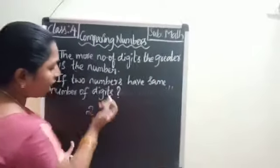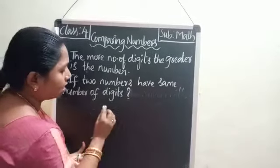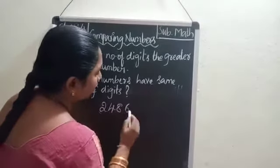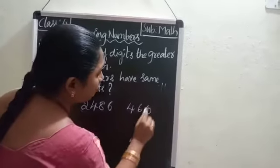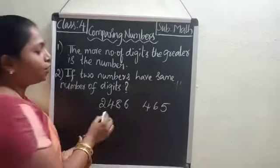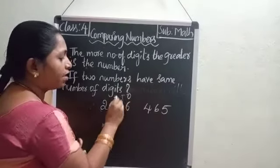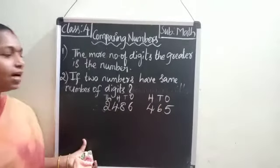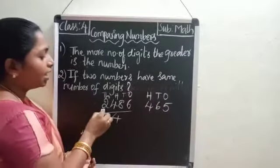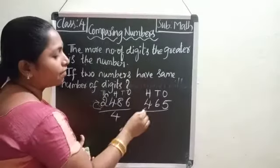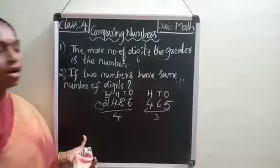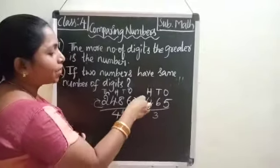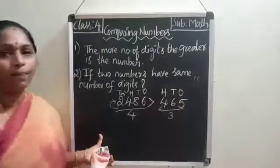For example, taking a four-digit number: two thousand four hundred and eighty-six (2,486) is one number, and four hundred and sixty-five (465) is another number. If you look here — ones, tens, hundreds, thousands — here the number has four digits going up to thousands, whereas the other has only three digits up to hundreds. So 2,486 will be greater than 465.